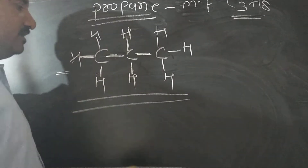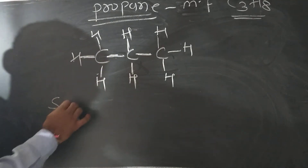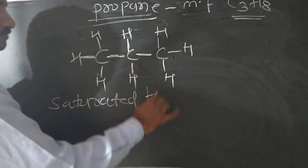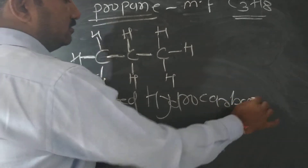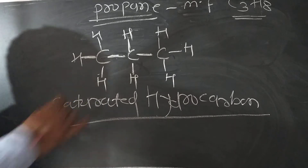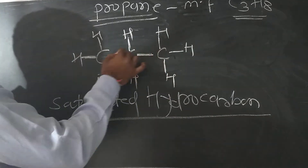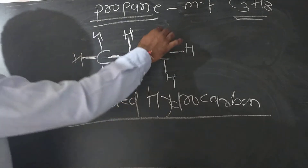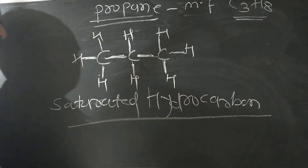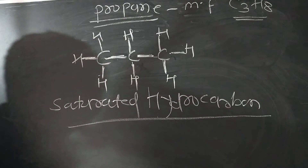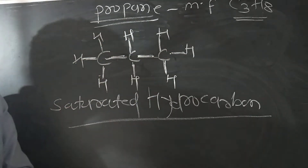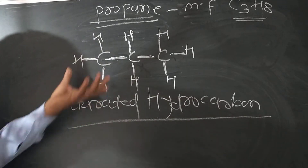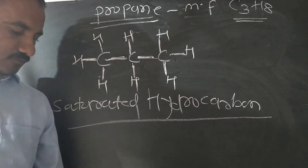Now, this is a saturated hydrocarbon. Why is it a saturated hydrocarbon? A saturated hydrocarbon is a compound which has only single bonds — all bonds are single bonds. Hydrocarbon having all single bonds is called a saturated compound. This carbon has only single bonds, therefore this is called a saturated hydrocarbon. Hydrocarbons containing only single bonds are called saturated hydrocarbons.